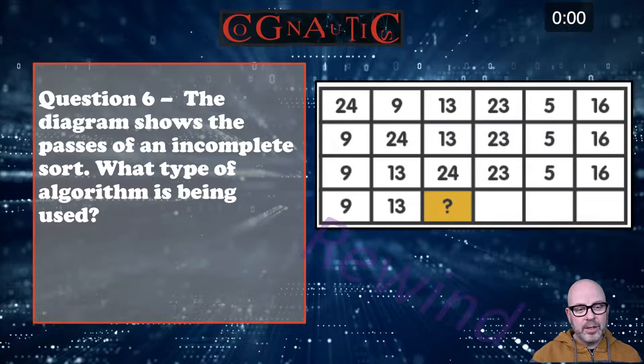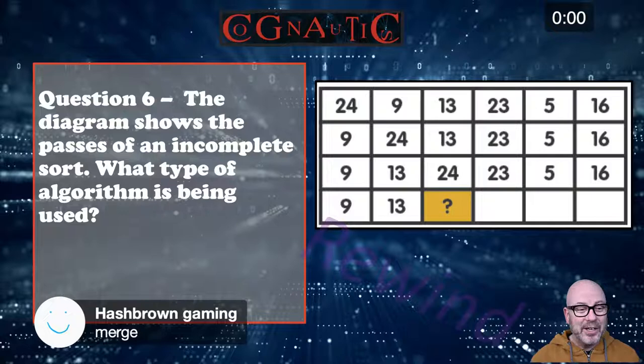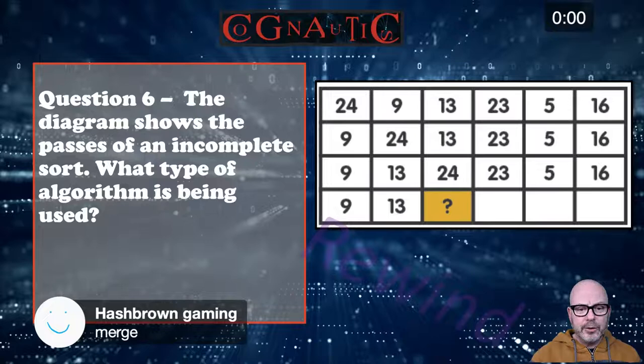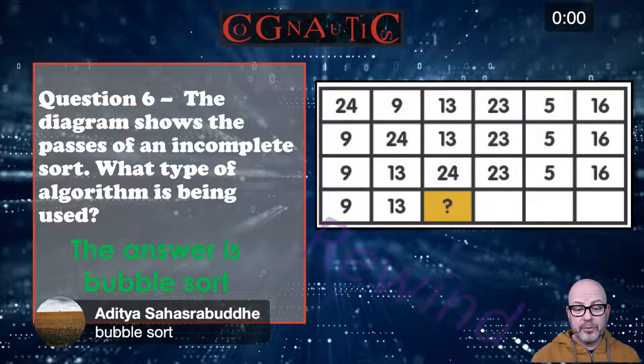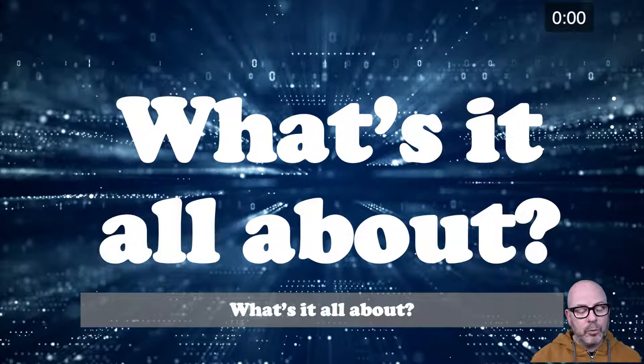Hash brown was absolutely spot on. This diagram shows the passes of an incomplete sort — what type of algorithm is being used? Aditya is going with bubble sort, and the answer is indeed bubble sort. Let's crack on — what's it all about today?